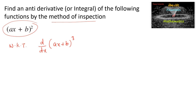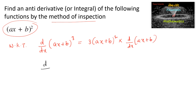(ax + b) whole power 3, we can write 3 times of (ax + b) whole square into the differentiation d by dx of (ax + b), by using the chain rule method. So we can write d by dx of (ax + b) whole power 3 is equal to 3 times of (ax + b) whole square into...